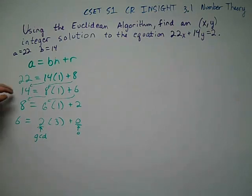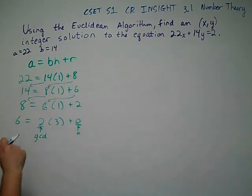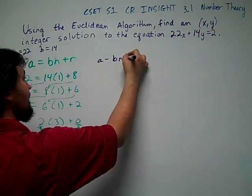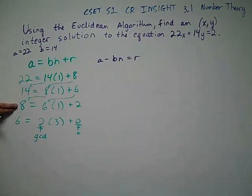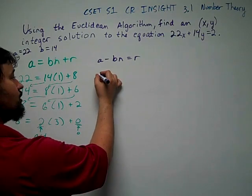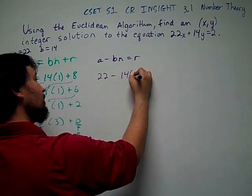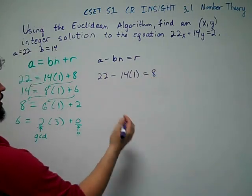Now I'm going to take these and rewrite them. Instead of being solved where it's A equals BN plus R, I'm going to put it in the form A minus BN equals R. Instead of writing all four statements, I'm going to write just the first three. So 22 minus 14 times 1 is 8. I'm going to leave some space here.